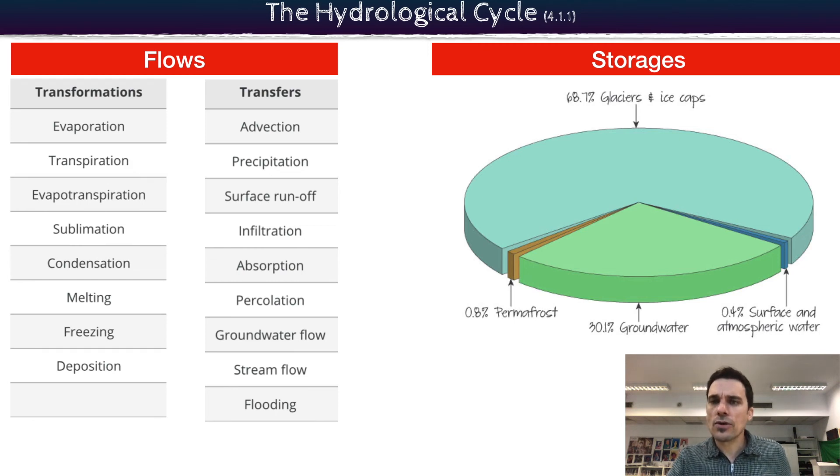Storages as well. One interesting note here about storage is close to 70 percent of the water on this planet is in the form of ice, glaciers and ice caps. That's a huge deal when we get into other discussions and we start talking about climate change.